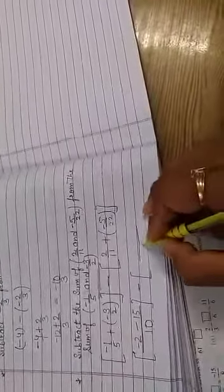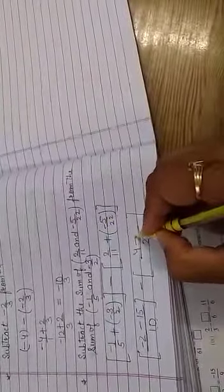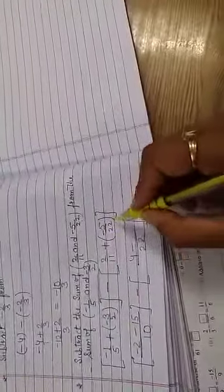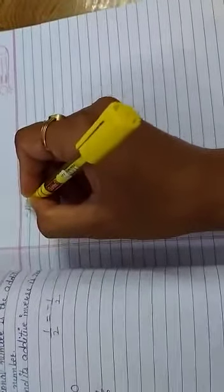LCM of 11 and 22 is 22. 22 divided by 11 is 2, 2 multiplied 2 is 4. Plus and minus minus. 22 divided by 22 is 1, 1 multiply 5 is 5.